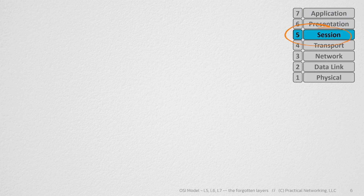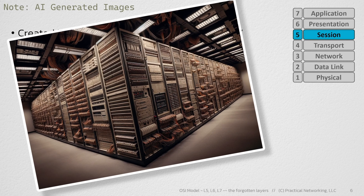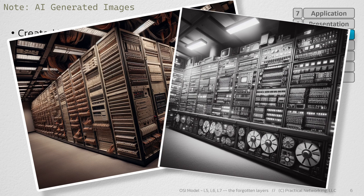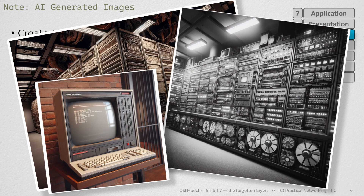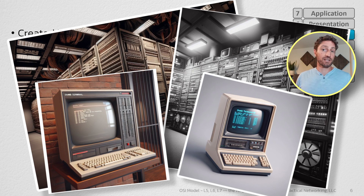To understand layer 5 of the OSI model, you have to understand that this model was created long before the days of personal computers. Back in those days, computing was done on large massive machines called mainframes, which were often so big they took up entire rooms. The computing resources on these enormous mainframes were accessed by people using what is known as dumb terminals — effectively just a monitor and a keyboard plugged in, with no actual processing done on them. This was also the model that Linux was created in, which is why Linux is often described as a multi-user operating system.